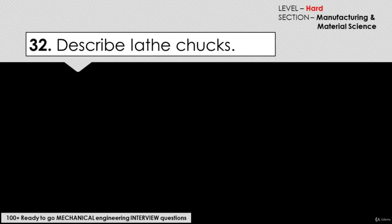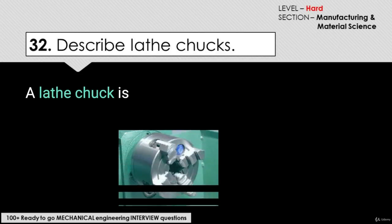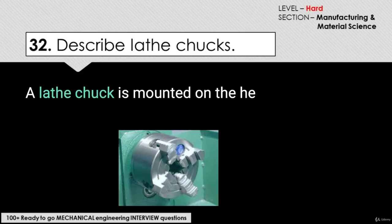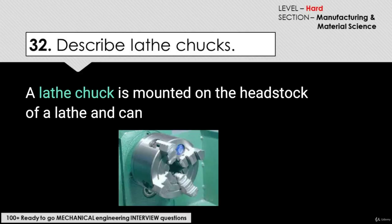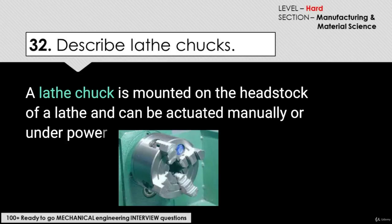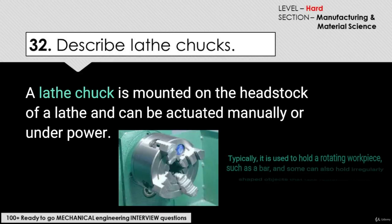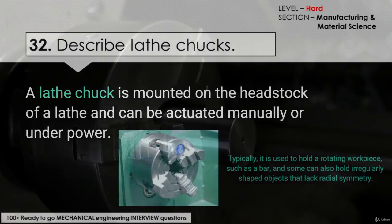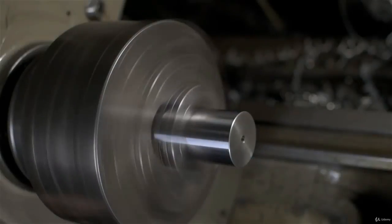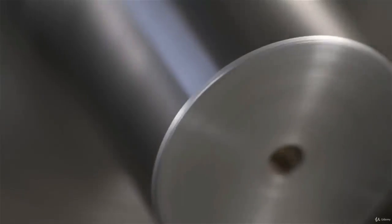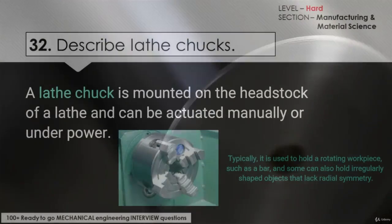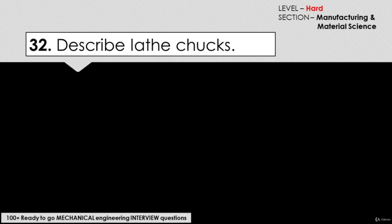Describe lathe chucks. A lathe chuck is mounted on the headstock of a lathe and can be actuated manually or under power. Typically, it is used to hold a rotating workpiece such as a bar, and some can also hold irregular-shaped objects.